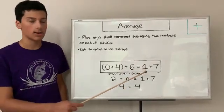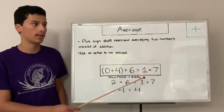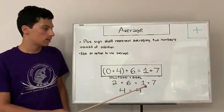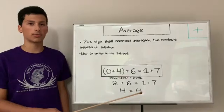On the goal side, you see an addition sign, so that also means average as well. So 1 plus 7 averages out to be 4. So 4 does equal 4.